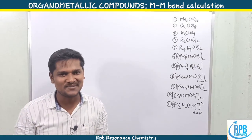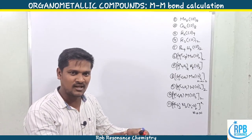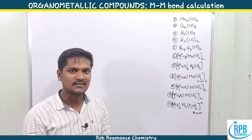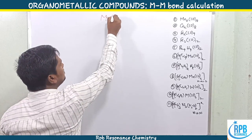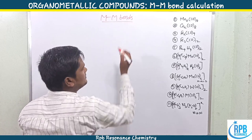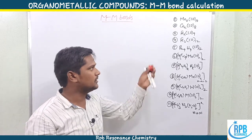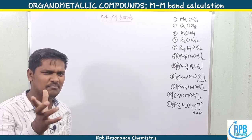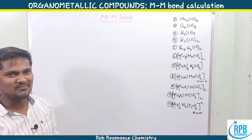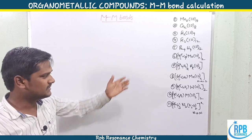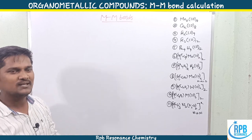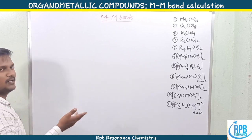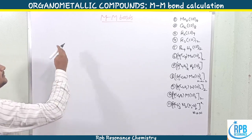Hi everyone, welcome to RPB Resonance Chemistry. Let's continue our lectures on organometallic chemistry. This is another lecture in organometallic chemistry on a very important topic: the calculation of the number of metal-metal bonds. We'll cover how to calculate the number of metal-metal bonds in plenty of organometallic compounds, with a very simple trick. Let's start with a basic introduction, then we'll solve problems one by one.